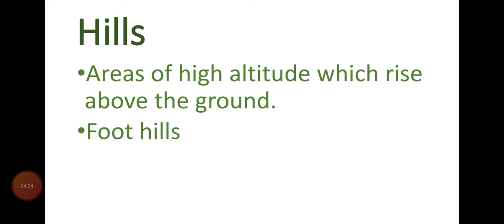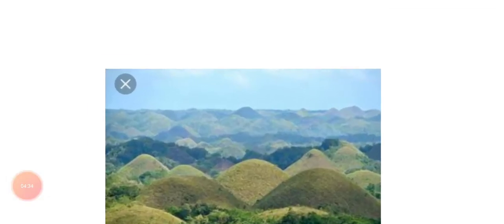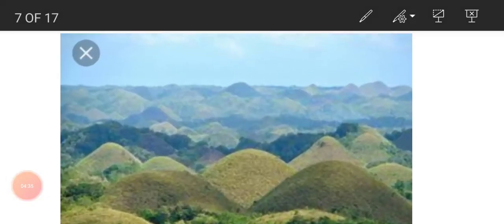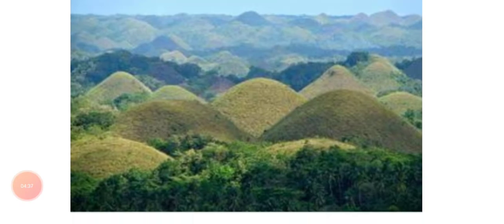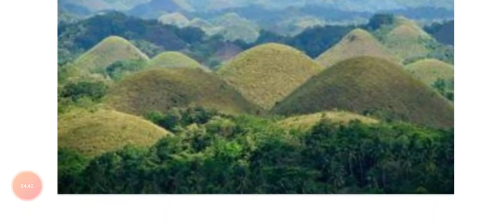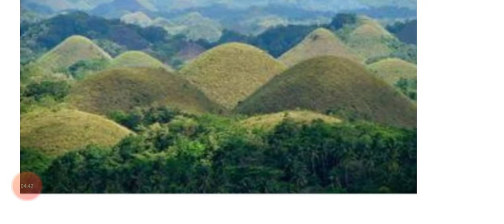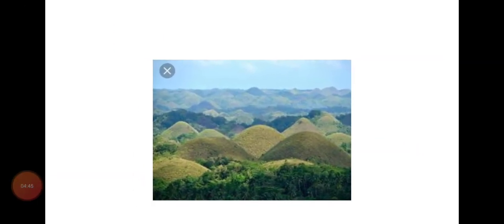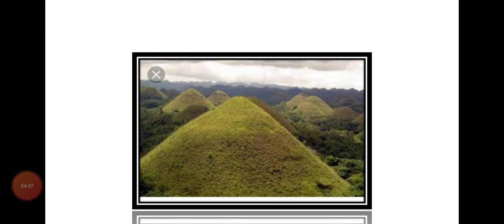In Pakistan there are many hilly areas in our northern regions, such as Margalla Hills, Kirsar Hills, and Murree Hills. Look at this picture — you can see beautiful hills. What do you observe? Hills are very green, which means the land of the hills is very fertile and there is much greenery on them.